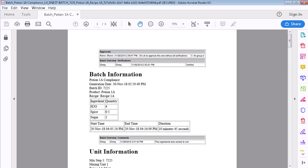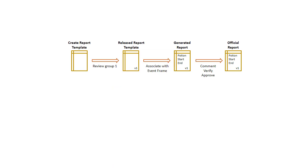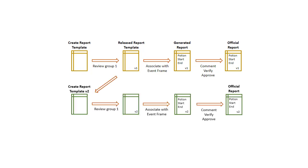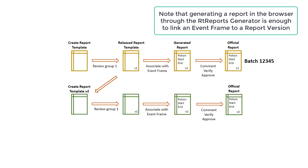You've now seen an example of printing in the RT reports generator, including commenting and verifying, approving, and officially printing, as well as the security settings required to set this up. A final note on versioning: it's possible to create multiple versions of a report. Once version 2 of a report template has been released, all future batches will automatically be printed using that version. However, it's possible to change the effective dates to something other than the time of release. You could end up in a situation where you've already printed an event frame with version 1, but it's technically inside the effective times of version 2 — in that case, since you've already printed that event frame with version 1, you won't be able to print it with version 2.